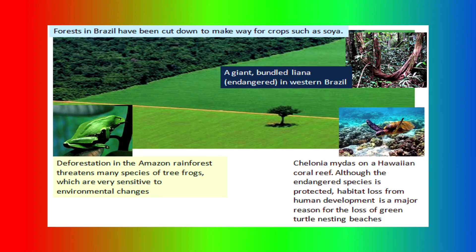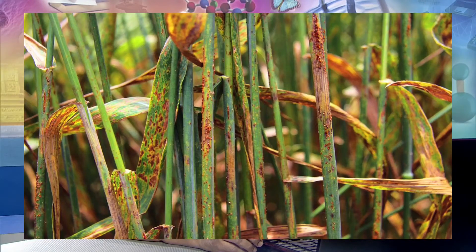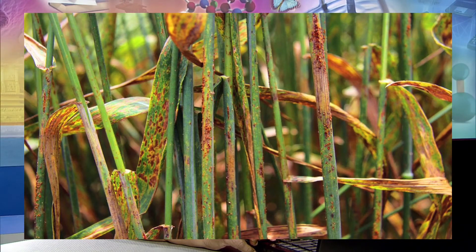If this deforestation continues, this particular plant is going to become extinct very soon. The left side shows a tree frog, which is very sensitive to environmental changes and is also listed as a threatened species. The lower right picture is of a Chelonia — a green turtle found in Hawaiian coral reef — an endangered species whose habitat loss is endangering its survival too. High-yielding varieties are more susceptible to diseases like smut in sugarcane, maize, and sorghum. This picture shows smut on a wheat plant — the red spots depict diseased areas of the leaf.